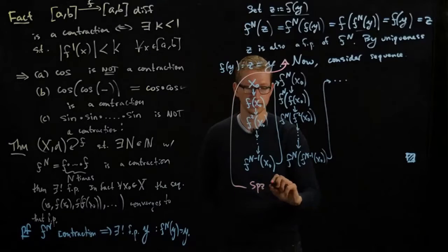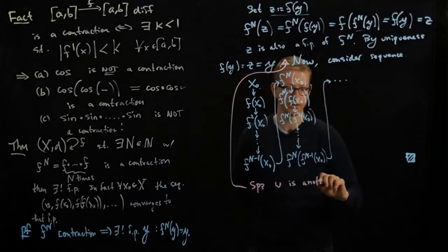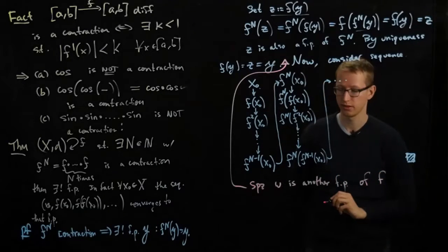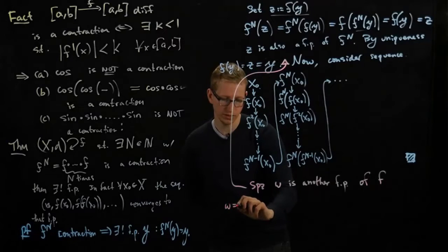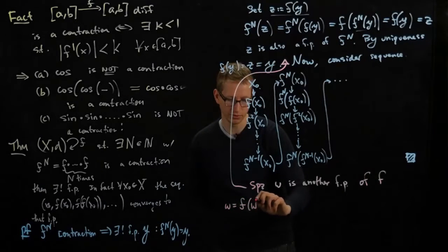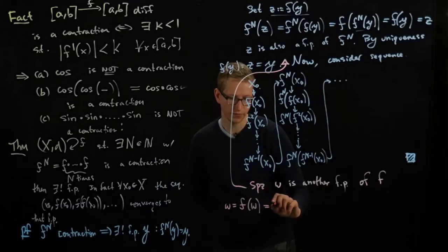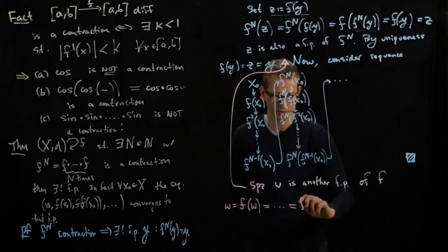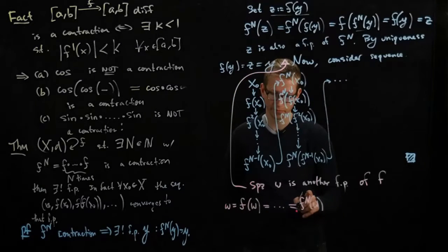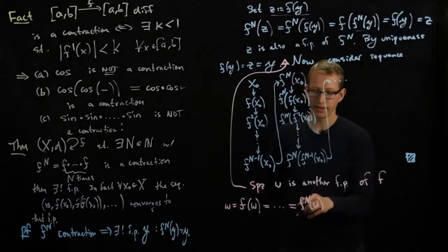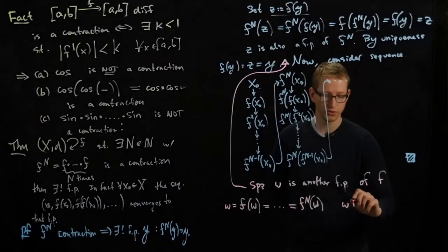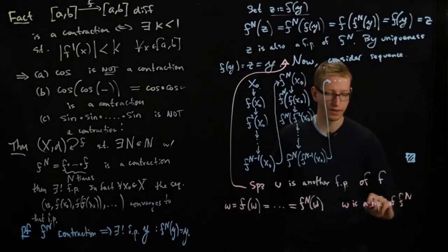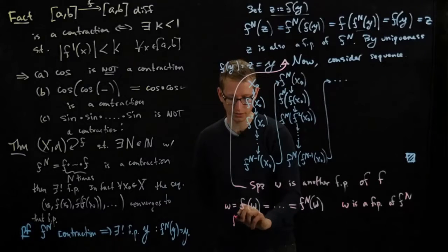Suppose w is another fixed point of f. So then we have w equals f of w, and because it's a fixed point we can apply f iteratively to w and we'll get f n w. But this shows us that w is a fixed point of f n, and f n is a contraction.